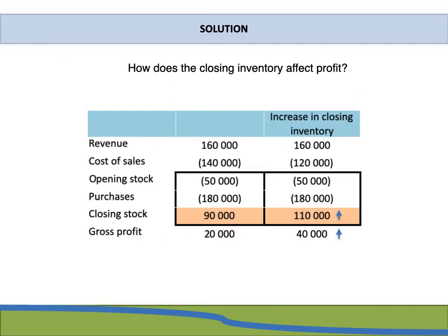Before we start the calculations, let's look at the effect of an increase in closing inventory on profits. Assume a company has revenue of R160,000, opening inventory of R50,000, purchases of R180,000, and closing inventory of R90,000. The cost of sales is therefore R140,000 (R50,000 + R180,000 − R90,000), giving a gross profit of R20,000.